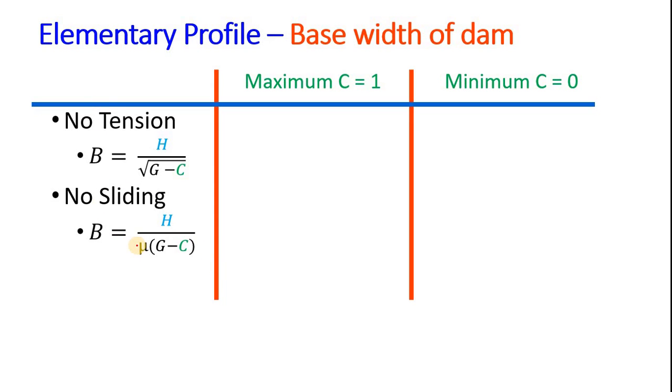We derived these two equations. Now when C equals 1, the maximum value C can have is 1 and minimum C can have is 0. So when C equals 1, B equals H divided by square root of G minus 1 for no tension, and for no sliding B equals H divided by mu times G minus 1.